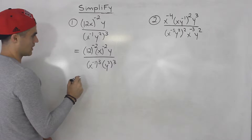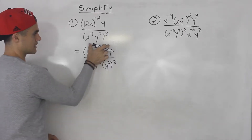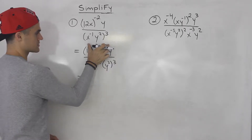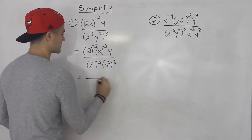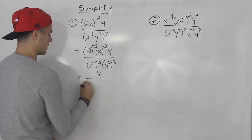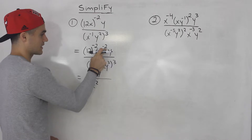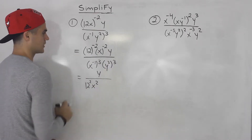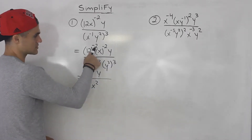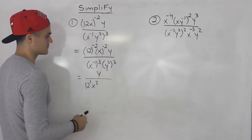From here, notice that both of these are negative exponents, so I'm going to bring them down. I'll be left with just y up top, and I'll have 12 squared and x squared in the denominator. This x to the negative two comes down and becomes x to the power of positive two. And this 12 to the negative two came down and became 12 to the power of positive two.